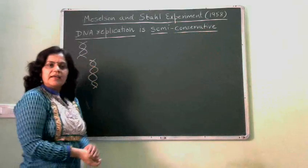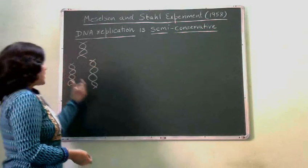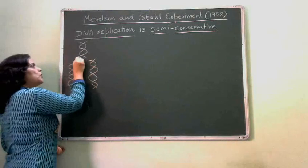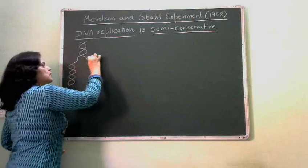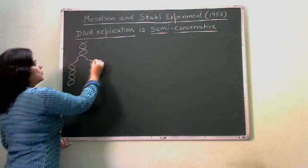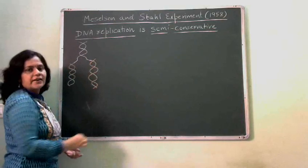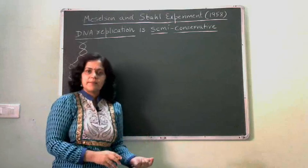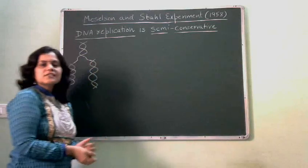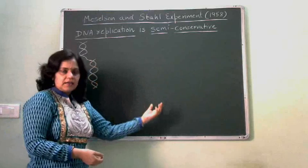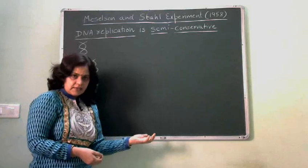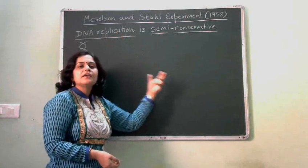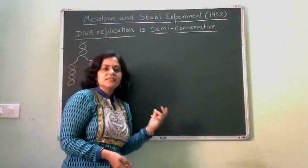To prove this, we are studying this experiment. As you have seen, when parent DNA opens into its two strands, a new daughter strand is formed over it with the help of raw materials and enzymes involved in DNA replication. We will talk about DNA replication in detail later. Right now, we are doing this experiment — proof that DNA replication is semi-conservative.